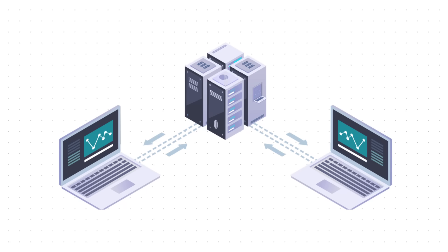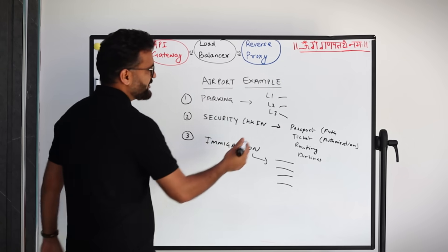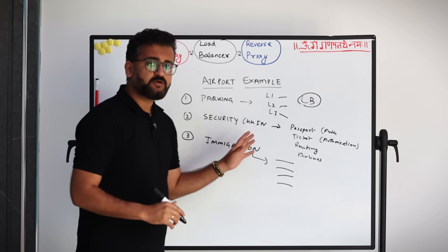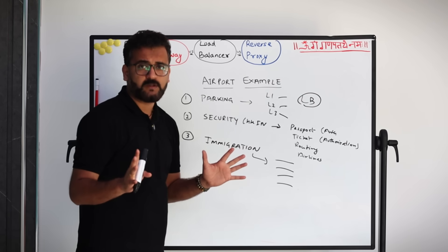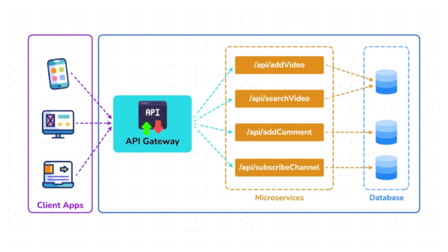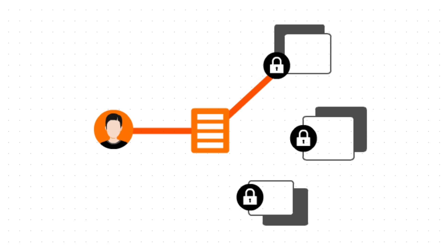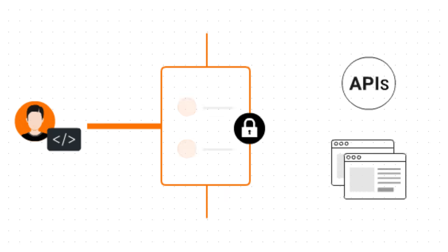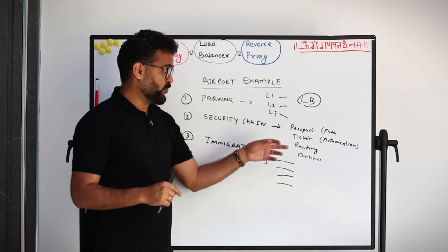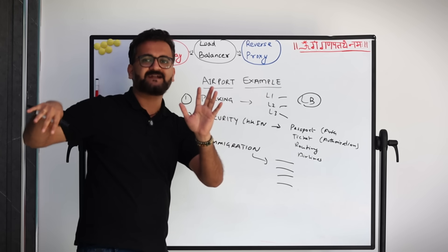Now let's connect these dots. When you are only distributing load — one server getting many requests — without applying much intelligence, that is a load balancer situation. Security check-in is similar to an API gateway: you're not just distributing load, you're identifying who needs what and where to route that request. The API gateway authenticates and authorizes requests and routes them to the correct microservice — and then a load balancer can further distribute traffic within that service.